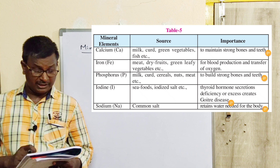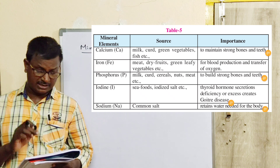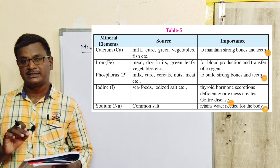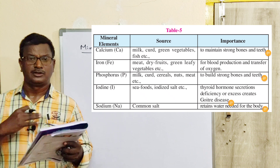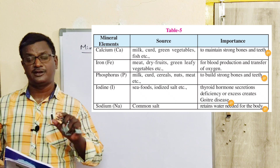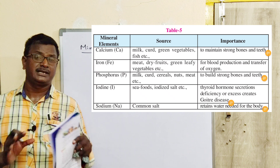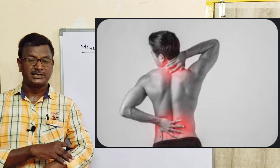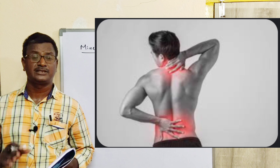Sodium sources: common salt — the main source of sodium. Importance: retains water needed for the body. Sodium is very important to maintain water and salt balance. Water and salt balance is critical because water loss causes dehydration. Sodium deficiency causes dehydration, cramps, muscle pains, bone pains, and neck pains.